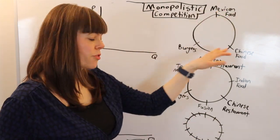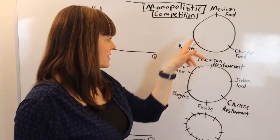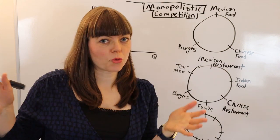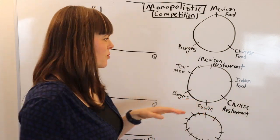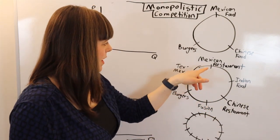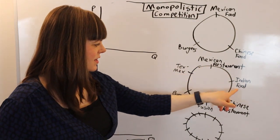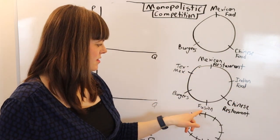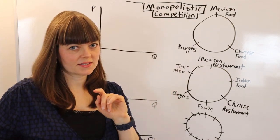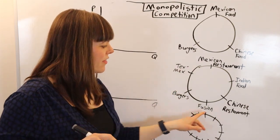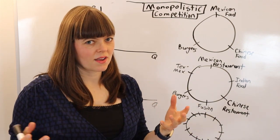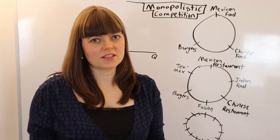There's the case where there's only three restaurants in town — Mexican, burgers, Chinese food. Then there's the Goldilocks case where there's the perfect number of restaurants: Mexican, Indian, Chinese, Fusion, burgers, and Tex-Mex. And then there's a case where there's too many restaurants in town and a bunch of them are making losses.